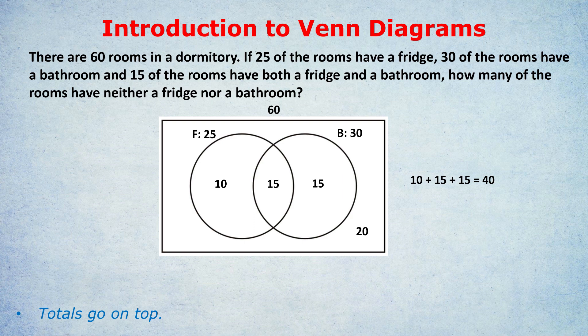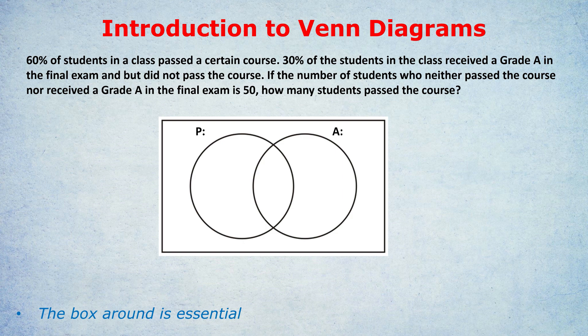Now we're moving on to a medium-level Venn diagram question. 60% of students in a class passed a certain course. 30% of the students received a grade A in the final exam but did not pass the course. If the number of students who neither passed the course nor received a grade A is 50, how many students passed the course? I've put labels on the diagram: P for passing the exam and A for getting a grade A. First, 60% of the students passed the course — that's a total, so it goes on top.